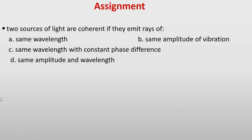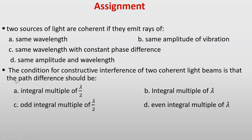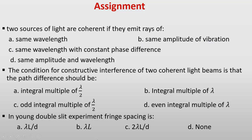Assignment MCQs: (1) Two sources of light are coherent if they emit rays of: same wavelength; same amplitude of vibration; same wavelength with constant phase difference; or same amplitude and wavelength. (2) The condition for constructive interference of two coherent light beams is that the path difference should be: integral multiple of λ/2; integral multiple of λ; odd integral multiple of λ/2; or even integral multiple of λ. (3) In Young's Double Slit Experiment, fringe spacing is: λL/d; λL; 2λL/d; or none. That's all about today's lesson. Thank you very much.